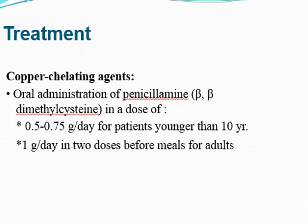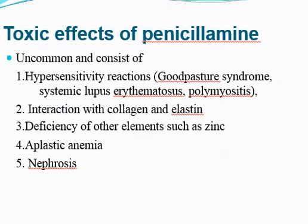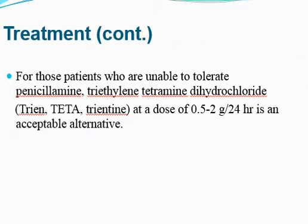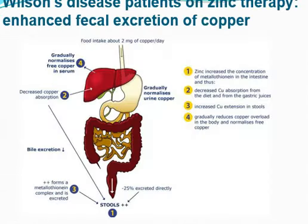Treatment of Wilson's disease includes the copper chelating agent — oral administration of penicillamine. Wilson's disease patients on chelating therapy show urinary excretion of copper. Toxic effects of penicillamine include hypersensitivity reaction, interaction with collagen and elastin, deficiency of other elements such as zinc, and may present as aplastic anemia and nephrosis. Patients who are unable to tolerate penicillamine may be treated with triethylene tetraamide dihydrochloride under trial studies. Zinc acetate is also given as an adjuvant therapy at a dose of 20–50 mg three times a day in adults, enhancing fecal excretion of copper.